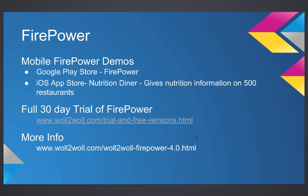On the iOS store, we were unable to put our demo because Apple only allows real apps. So we made a real app called Nutrition Diner, which lets you see over 500 restaurants in America and gives you the nutrition information on all menu items for each restaurant. Download it if you have an iPhone or iPad to find out nutrition information when dining out. You can also download our Firepower product from our website and find more information at wall2wall.com.